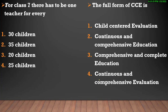Next question: For Class 7, there has to be one teacher for every how many children? Options: 30 children, 35 children, 20 children, या 25 children. Primary में 30 children पे 1 teacher होता है, and upper primary — यहाँ Class 7th की बात है जो upper primary में आता है — here your correct answer is 35 children for every one teacher.